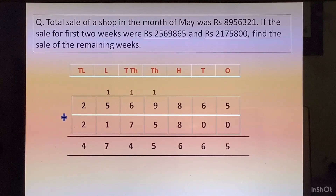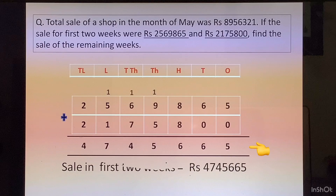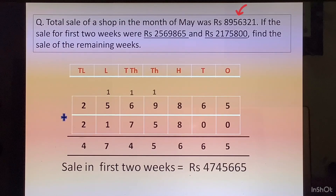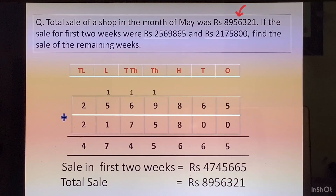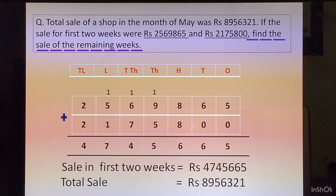Now we will find the sale in the first two weeks, so we will add these two numbers. Sale in the first two weeks = 2,569,865 plus 2,175,800. We add the numbers to get the total sale for the first two weeks. Now after we have got the sale in the first two weeks, and we also know from the question the sale of the entire month, we need to find the sale of the remaining weeks. Next statement: total sale ₹8,956,321. Then: find the sale of the remaining weeks.